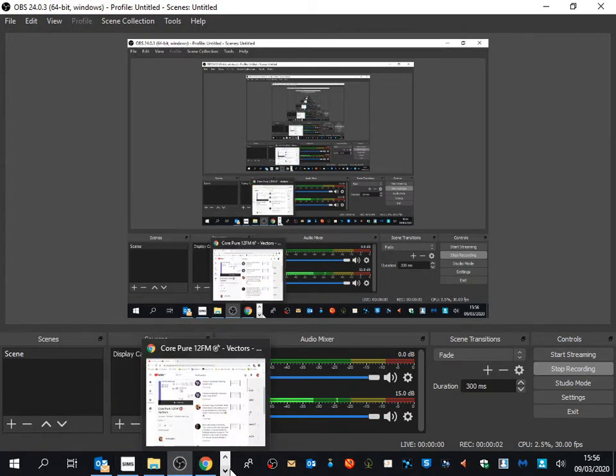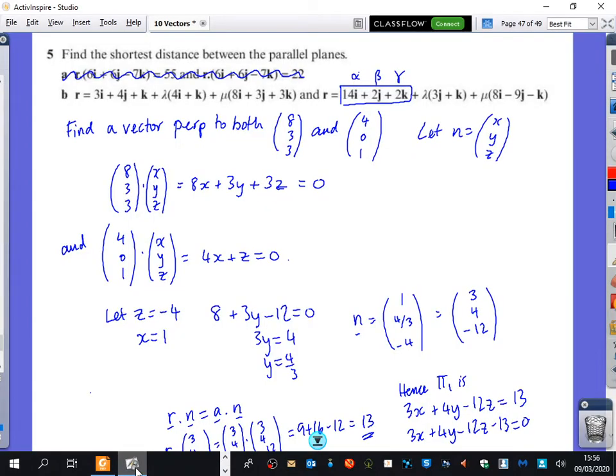Okay, just to quickly clarify what we were talking about here. This question is to find the shortest distance between these two parallel planes. They're both given in parametric form.